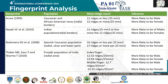Here I have tabulated the researchers, their populations, and their possible inferences. Acree conducted his research in 1999 on Caucasian and African American subjects. He conducted the study on 400 randomly picked individuals: 100 Caucasian male, 100 Caucasian female, 100 African male, and 100 African female. He found that irrespective of race, 11 ridges or less per 25mm² is more likely to come from a male, whereas 12 ridges or more is more likely to be from a female.